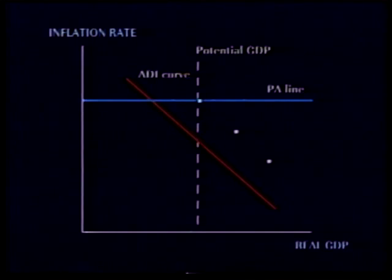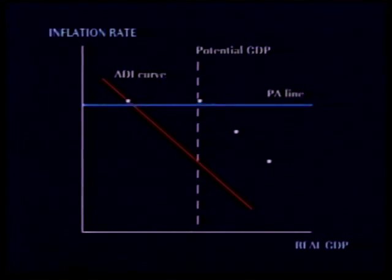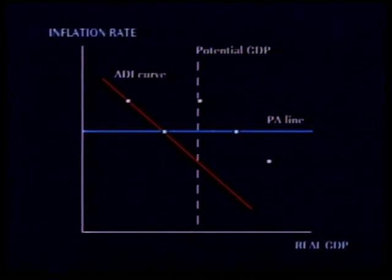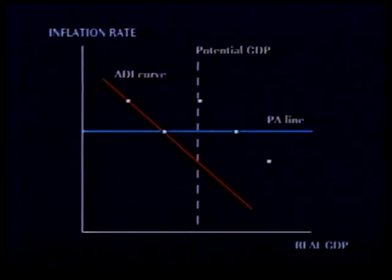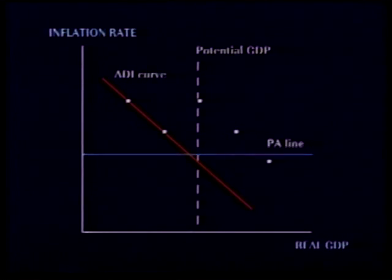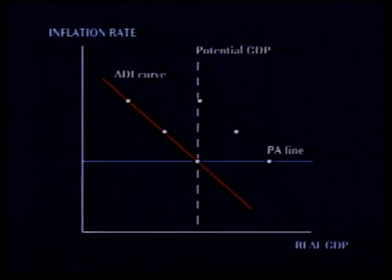But with the economy in a recession, inflation begins to drop. The PA line shifts downward. Finally, inflation returns to its original low level. Real GDP once again equals potential GDP. The economy is back where it started.